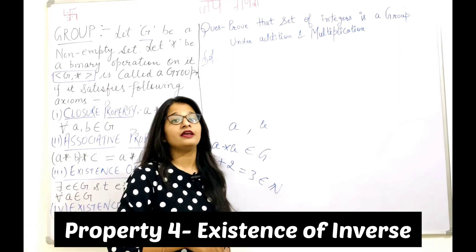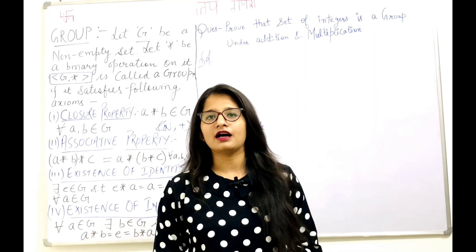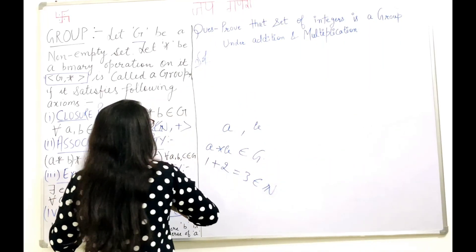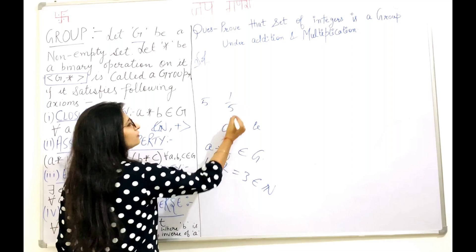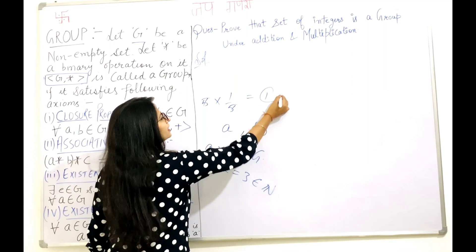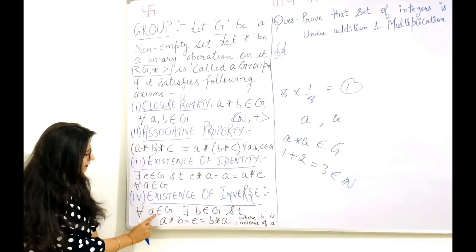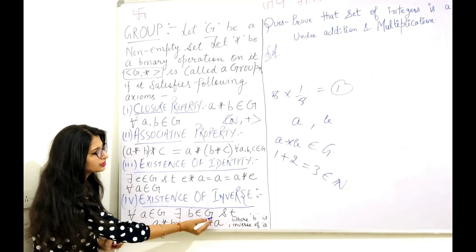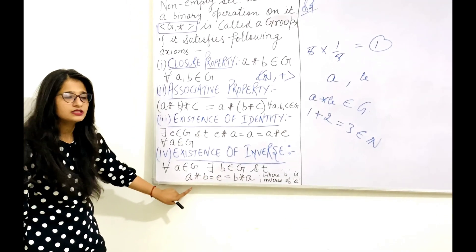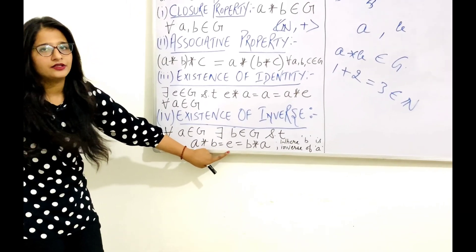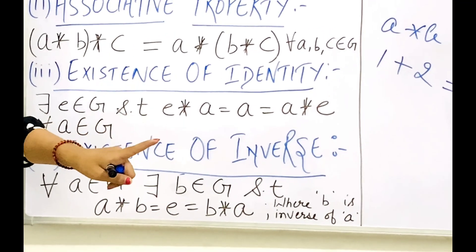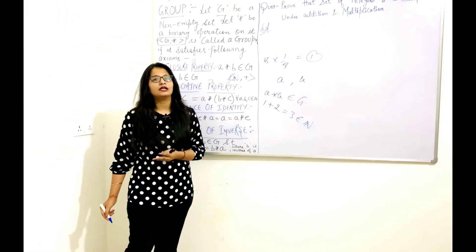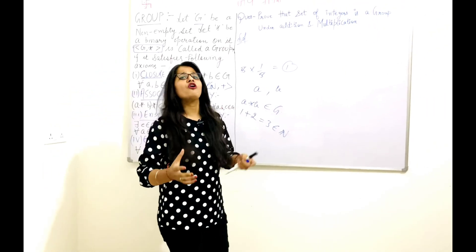The last property is existence of inverse. If you take any element from the set, there must exist an inverse for it. Inverse means its reciprocal. For example, if you have 5, then the inverse of 5 is 1 over 5, and when you multiply them you get the multiplicative identity, that is 1. For any element A belonging to the set, there must exist some B belonging to G such that A star B equals the identity. These are the four properties of a group.